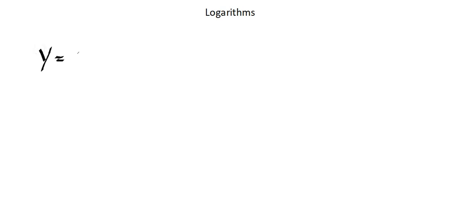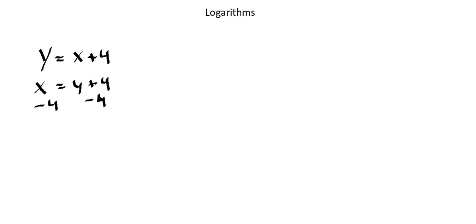Thinking about the concept of inverses, you've probably learned that if I want to calculate the inverse of y equals x plus 4, I will switch my variables: x equals y plus 4, and then manipulate the equation to set it equal to y. I'll subtract 4 from both sides and end up with y equals x minus 4. The concept here was I did the opposite of plus 4, which is minus 4, to isolate the y.